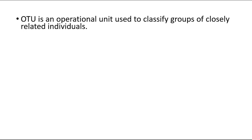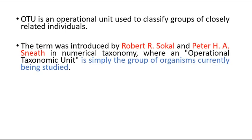OTUs stands for Operational Taxonomic Units. The definition of OTU is an operational unit used to classify groups of closely related individuals. This terminology was first introduced by Robert R. Sokal and Peter H. Sneath.